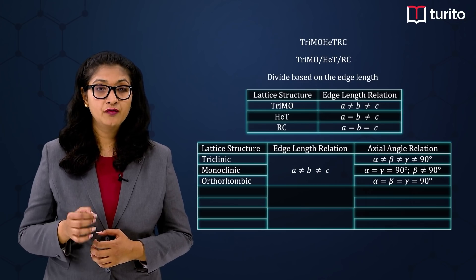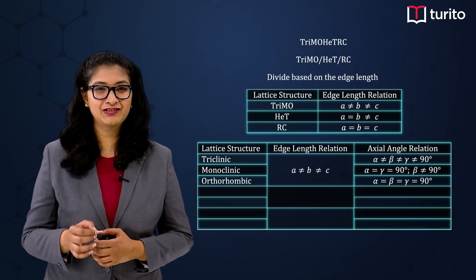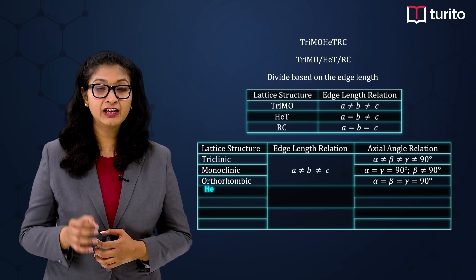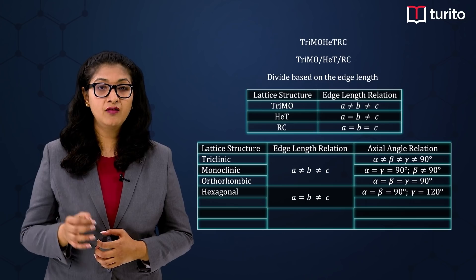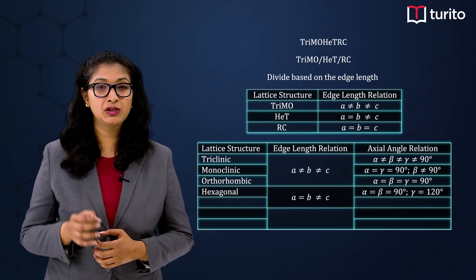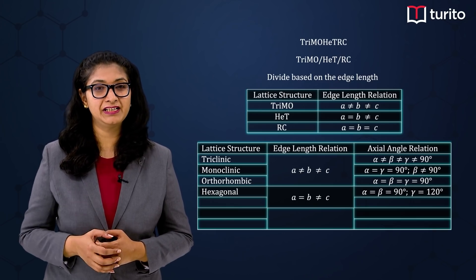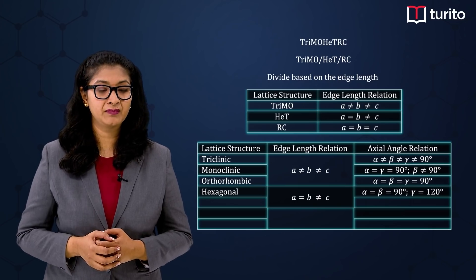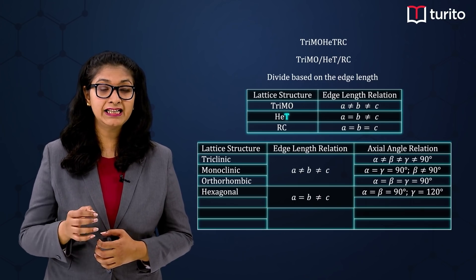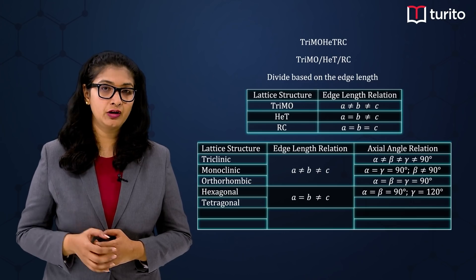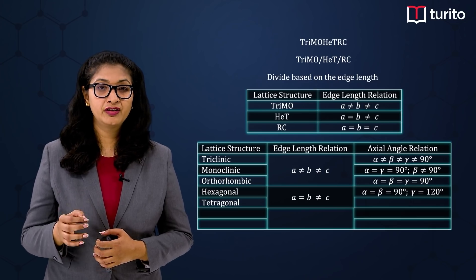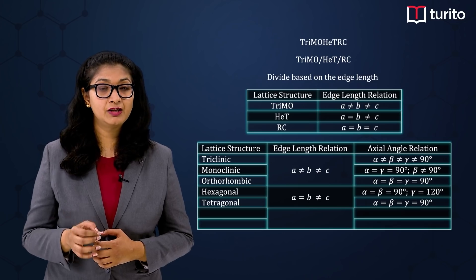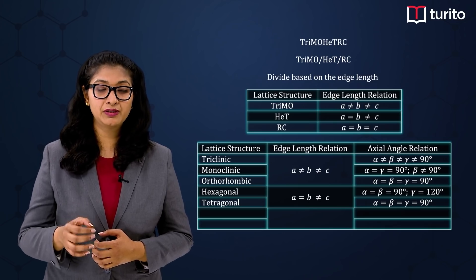Next, O stands for Orthorhombic, where alpha is equal to beta, which is equal to gamma, all equal to 90°. Next, H stands for Hexagonal, where alpha is equal to beta, both equal to 90°, and gamma is equal to 120°. Next, T stands for Tetragonal, where alpha is equal to beta, which is equal to gamma, all equal to 90°.